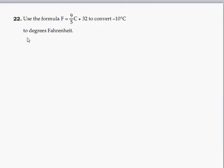We're going to use the formula F equals nine-fifths C plus 32 to convert negative 10 degrees Celsius into degrees Fahrenheit.